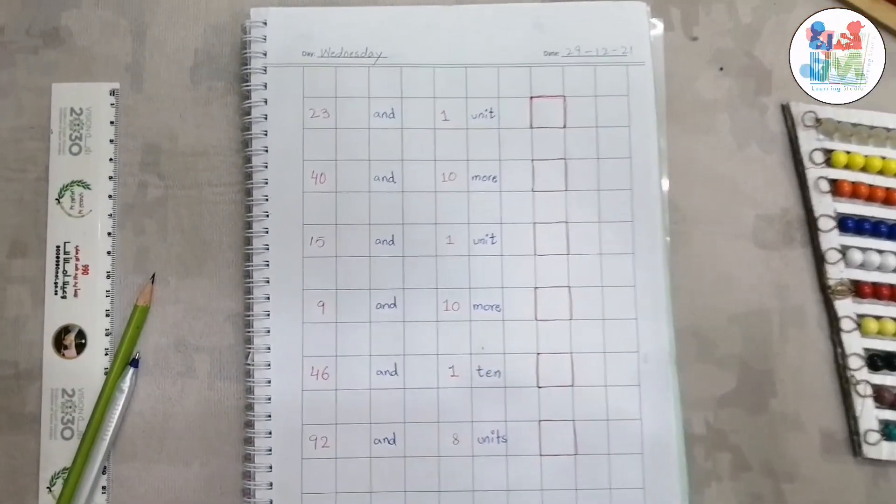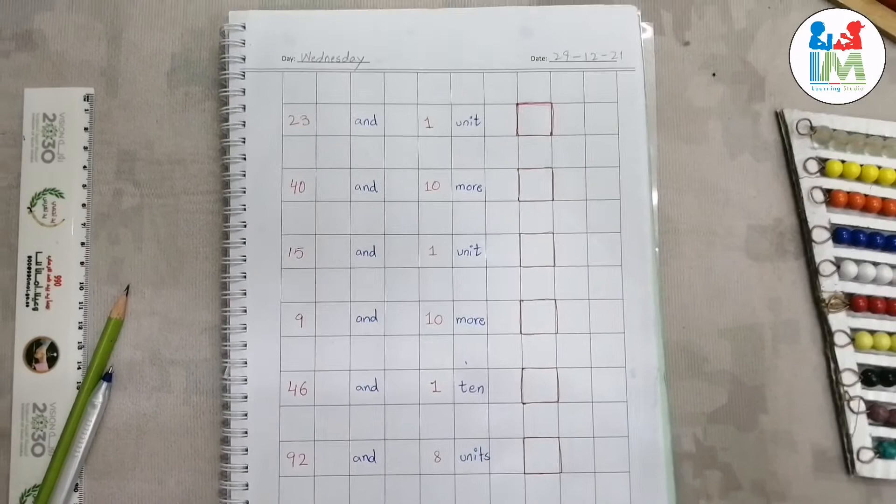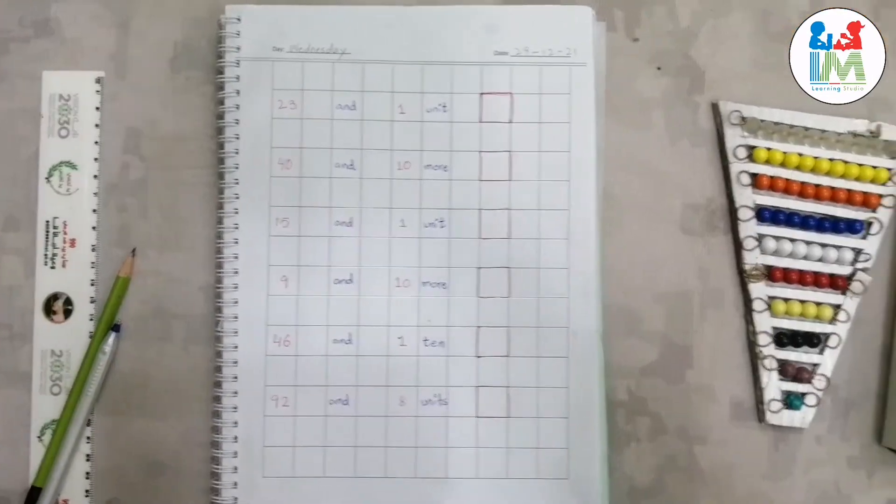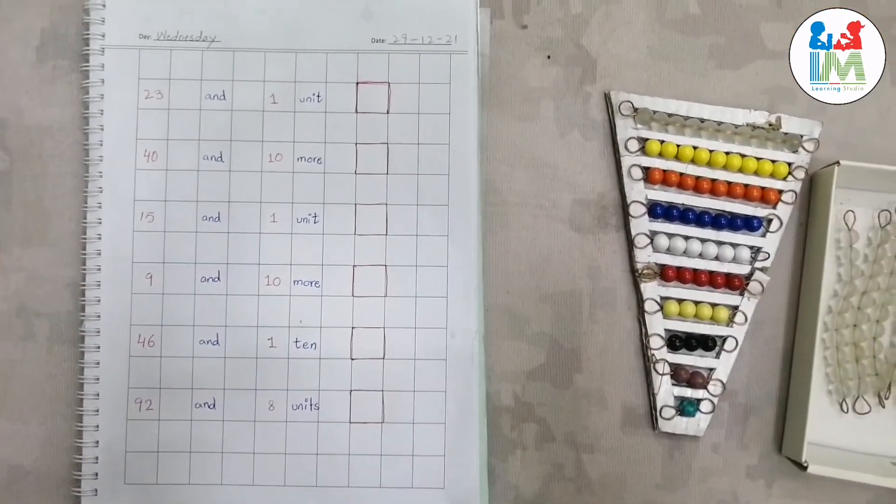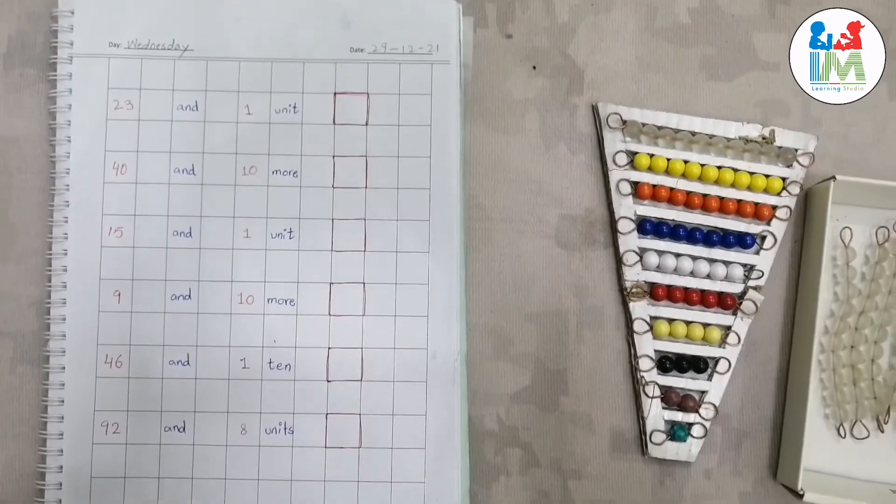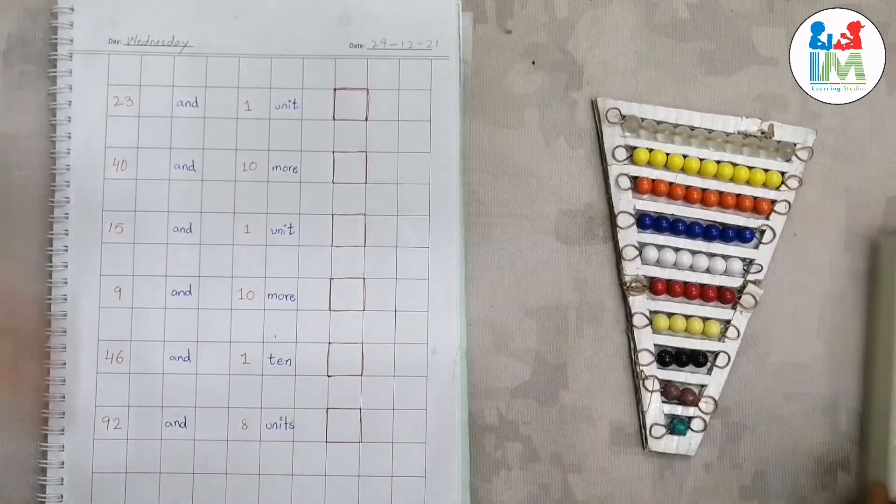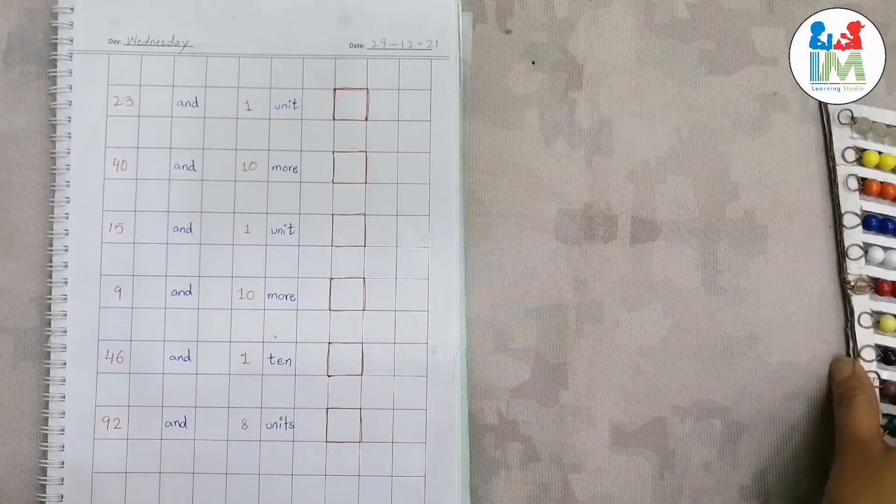Actually this activity is about adding units or tens to a big number. And in my point of view, you should try this activity first without these beads and later on with these beads, and you will see the difference how quickly the child will pick the concept with these beads.